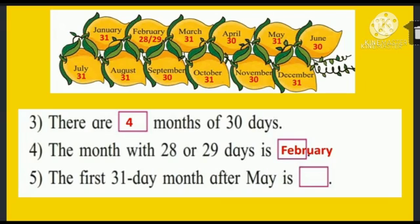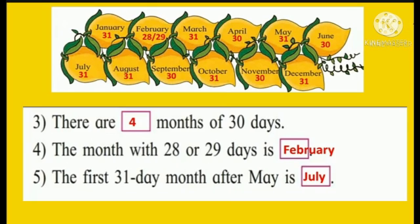Now next: the first 31-day month after May is dash. After May comes June, but June has 30 days. So the answer will be July, because July has 31 days.